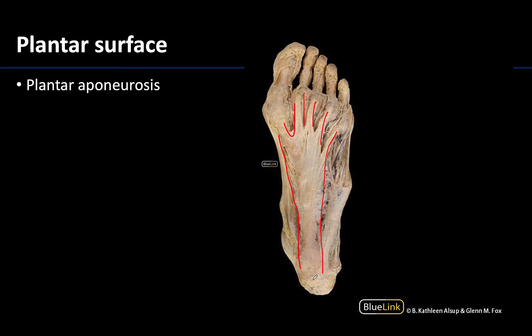The plantar aponeurosis extends from the calcaneus — specifically the medial tubercle of the calcaneus — and distally it divides into five bands which form fibrous digital sheaths that enclose those long flexor tendons that run along the surface of the foot.